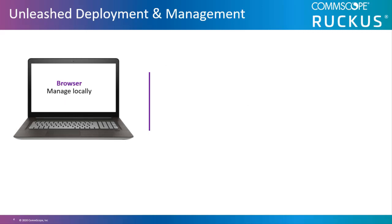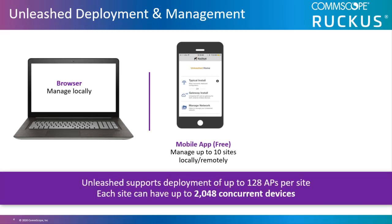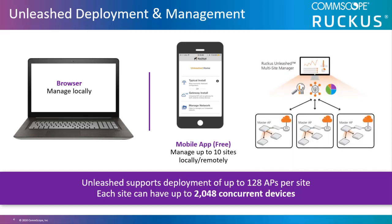Unleashed is an easy-to-deploy and manage solution with an intuitive user interface across all management options. A Ruckus Unleashed network can be managed using three options. The first is through a standard web browser with a laptop connected to the local Wi-Fi network. The second is a free mobile app for Apple and Android users. Up to ten different Unleashed networks can be managed from the mobile app, and with the built-in social login feature, administrators can link Unleashed Wi-Fi networks to their Gmail, Facebook, and Twitter accounts and manage their network from anywhere in the world. Unleashed supports up to 128 APs per site, and each site can handle up to 2,048 concurrent devices.